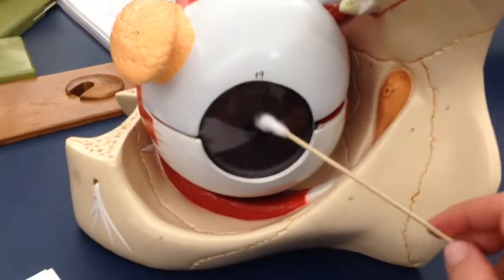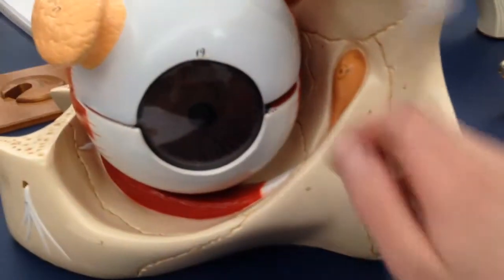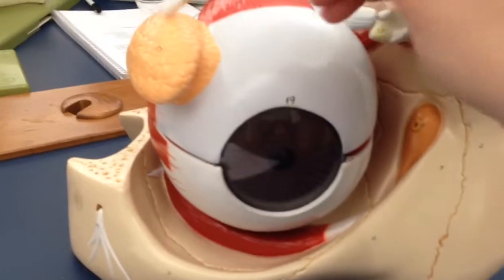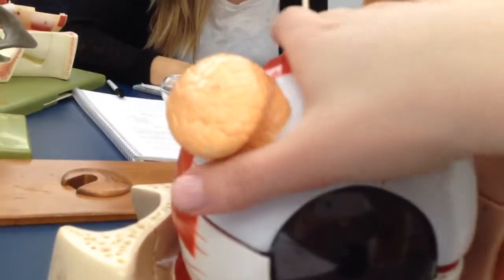Cornea, this clear lens on top of the iris. This is your lacrimal gland. Pupil, black side there.